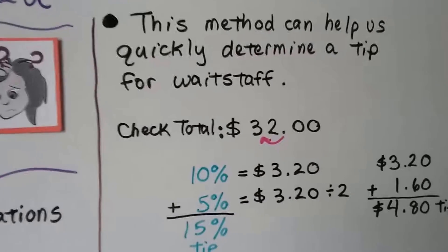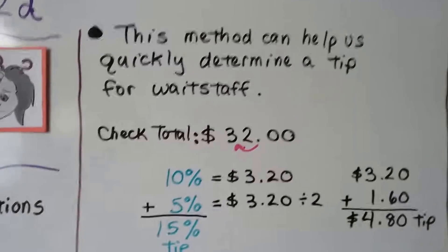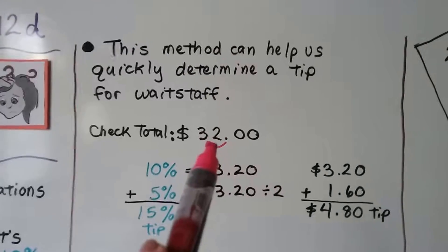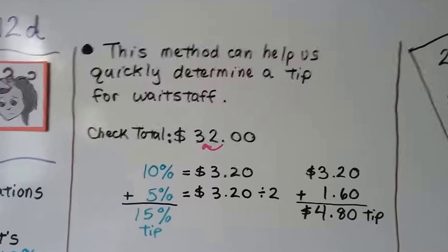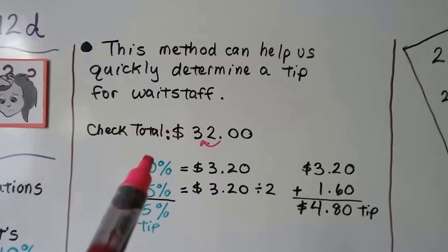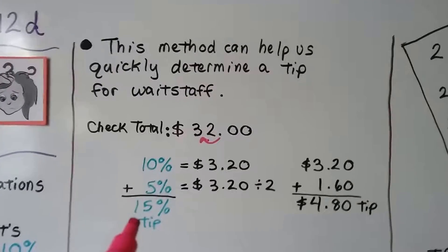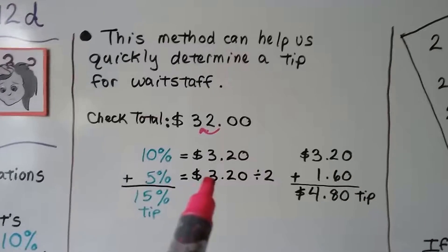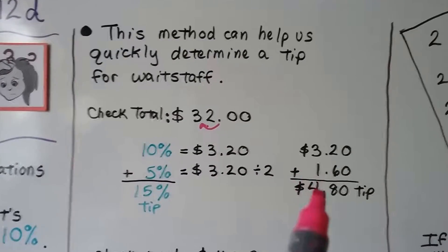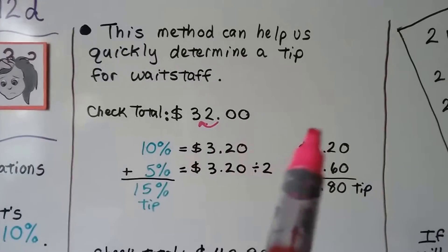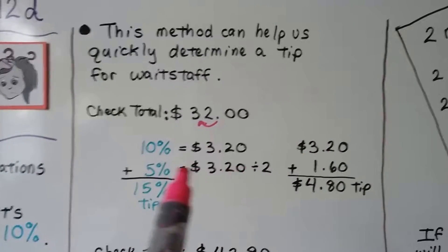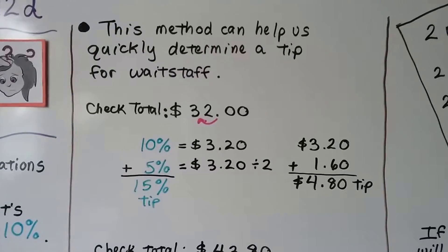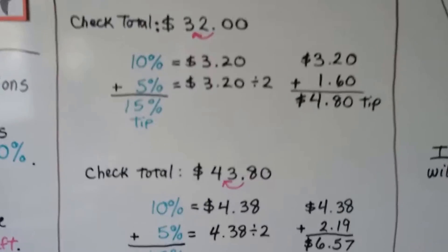This method can help us quickly determine a tip for waitstaff. If the check total is thirty-two dollars, we just move that decimal point in between the three and the two, and it's three dollars and twenty cents for ten percent. If we want to leave a fifteen percent tip, we cut that three dollars and twenty cents in half to be one dollar and sixty cents. We add the ten percent, three dollars and twenty cents, and the five percent, one dollar and sixty cents, and we get a four dollar and eighty cent tip.